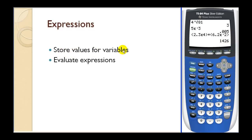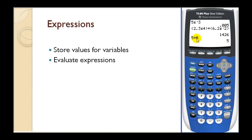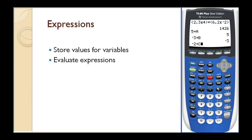Let's talk about how you can store values for variables. So let's say I want to store five for the variable A. I press five, then here's the store key, and now I have to find the letter A — you can see the letter A in green here. So I press alpha, math, enter. Now five is stored for A. Let's store negative three in for B: press negative three, store, then find the variable B — press alpha, apps, enter. And let's store negative two in for C: negative two, store, C is here, so alpha, program, enter.